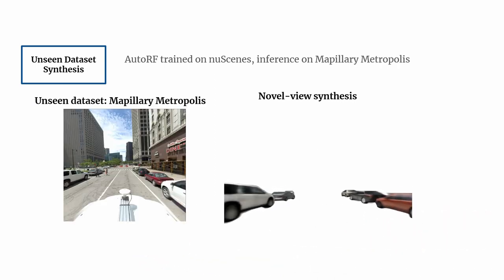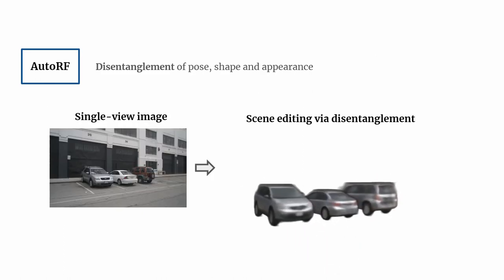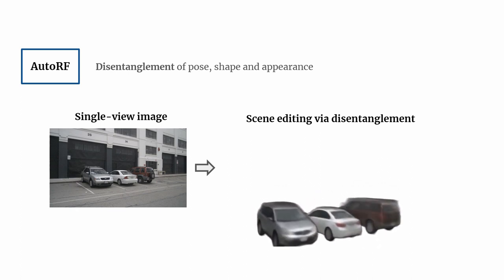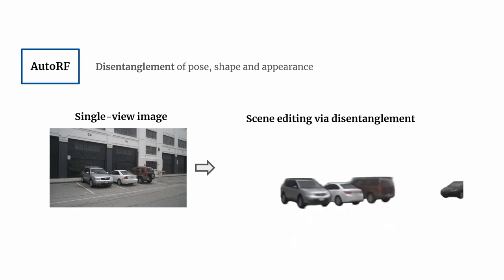Even on rectified 360-degree images from Mapillary Metropolis, AutoRF can synthesize full scenes. Our formulation decomposes an object into the physical properties of pose, shape, and appearance. This gives full control of each property, enabling easy scene editing.